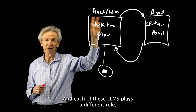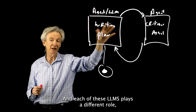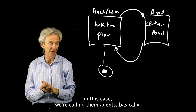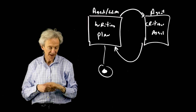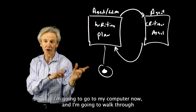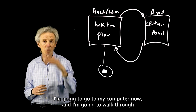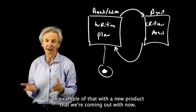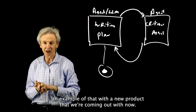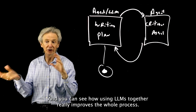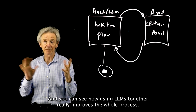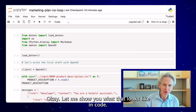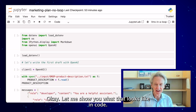Each of these LLMs plays a different role — in this case we're calling them agents. So that's the flow. I'm going to go to my computer now and walk through an example of that with a new product we're coming out with. You can see how using LLMs together really improves the whole process. Let me show you what that looks like in code.